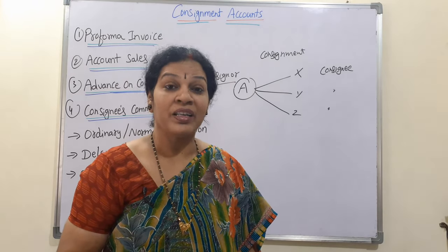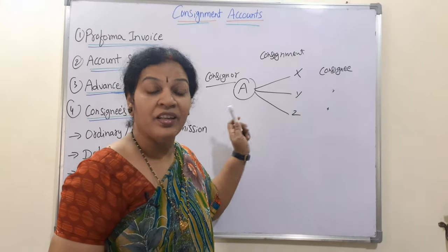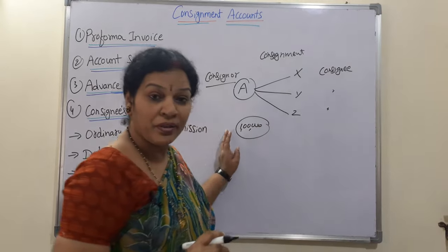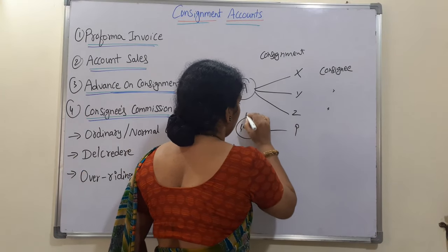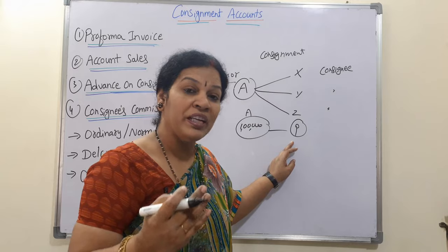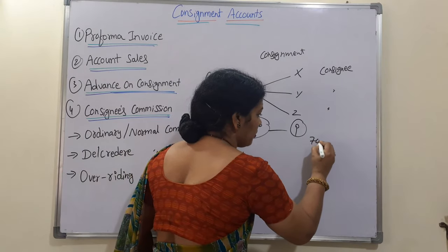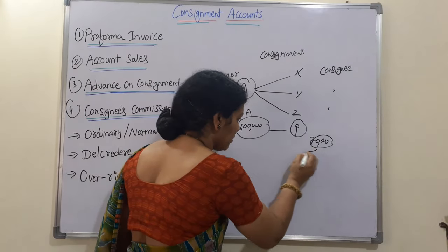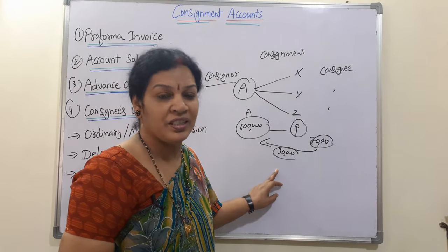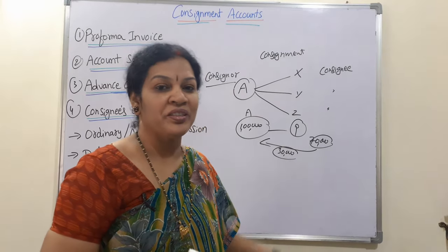Consignees work on behalf of the consignor on a commission basis. For example, A sends goods worth 1 lakh to P. P will sell what he can and return the rest to the consignor. Say he sold 70,000 worth of goods — the remaining 30,000 worth he returns to A. The selling rate is decided by the consignor.